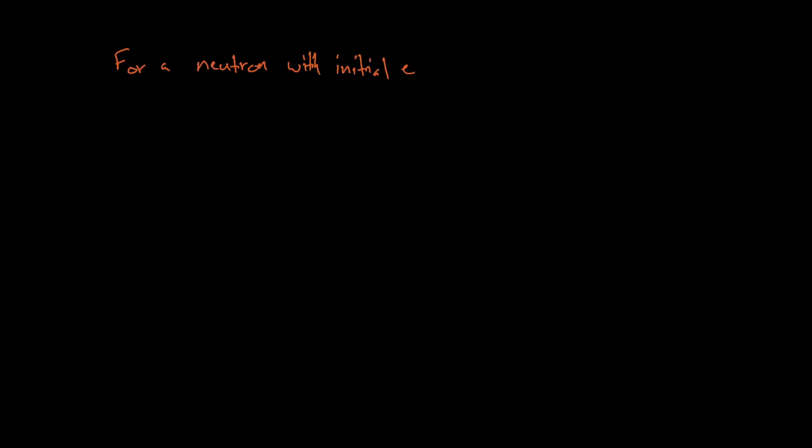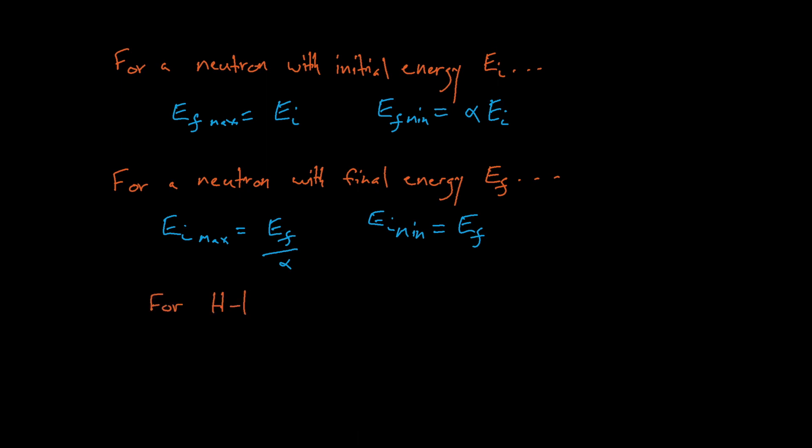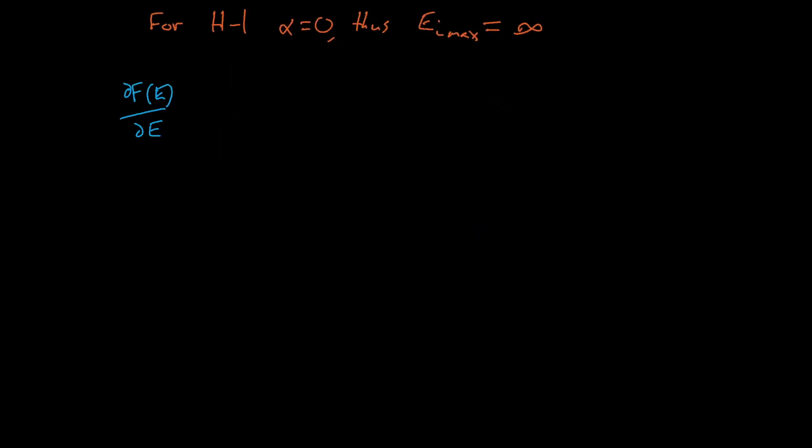Now what are the upper and lower energy bounds of this integral? Well, for a neutron with initial energy EI, the maximum energy it can scatter to is also just EI, and the minimum energy it can scatter to is alpha times EI. Now if we work backwards and consider a neutron with some final energy, EF, then the maximum energy it could have had before the scatter event is EF divided by alpha, and the minimum energy it could have had before the scatter is just EF, meaning that the particle lost no energy during the scattering event. These two values happen to be the values of Emax and Emin in our previous equation. Because A equals 1 for hydrogen, alpha is 0 and Emax is equal to infinity. Thus our first f over E term becomes 0.